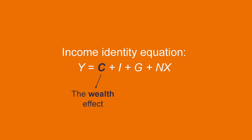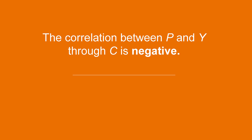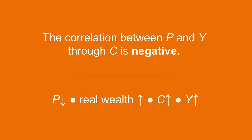Let's start with consumption. P's impact on C works through what economists refer to as the wealth effect. Let's suppose prices decline. When prices go down, what happens to the value of money? Can you buy more or less stuff with the same dollar? Things are cheaper when prices go down, so you should be able to buy more. The value of money increases as a result. Lower prices therefore make you wealthier in real terms, so you will consume more as a result, and C increases. When C goes up, as you can see from the income identity equation, so does Y. Therefore, the correlation between P and Y through consumption C is negative. As P declines, real wealth increases, C increases, and Y increases.